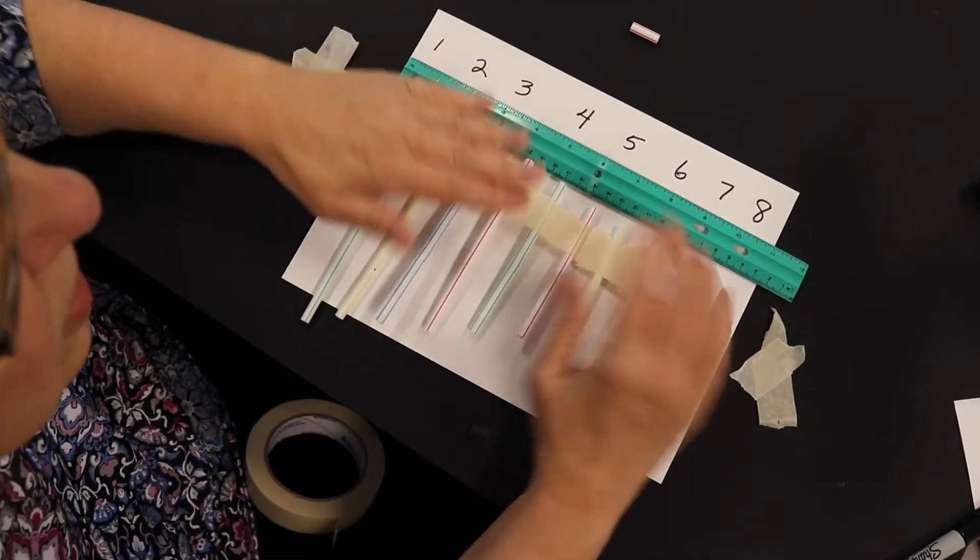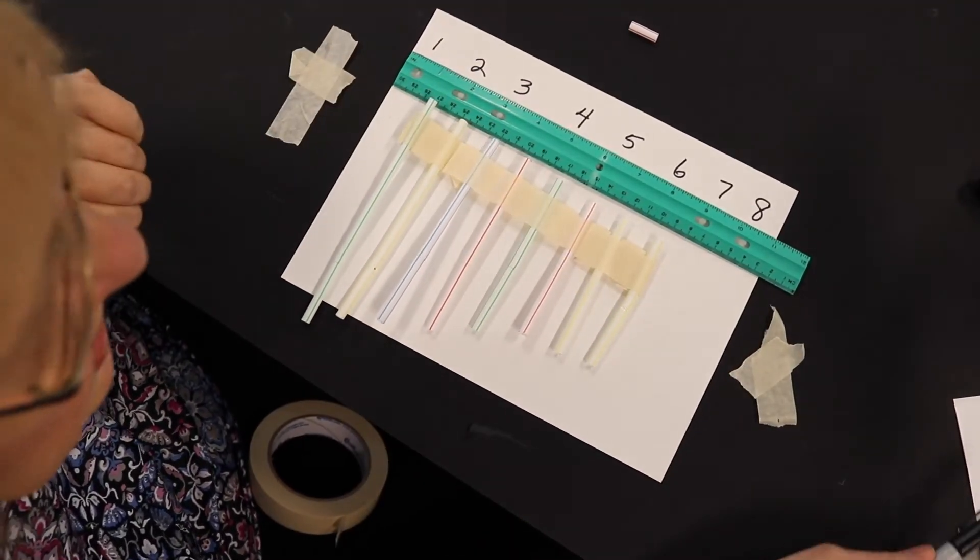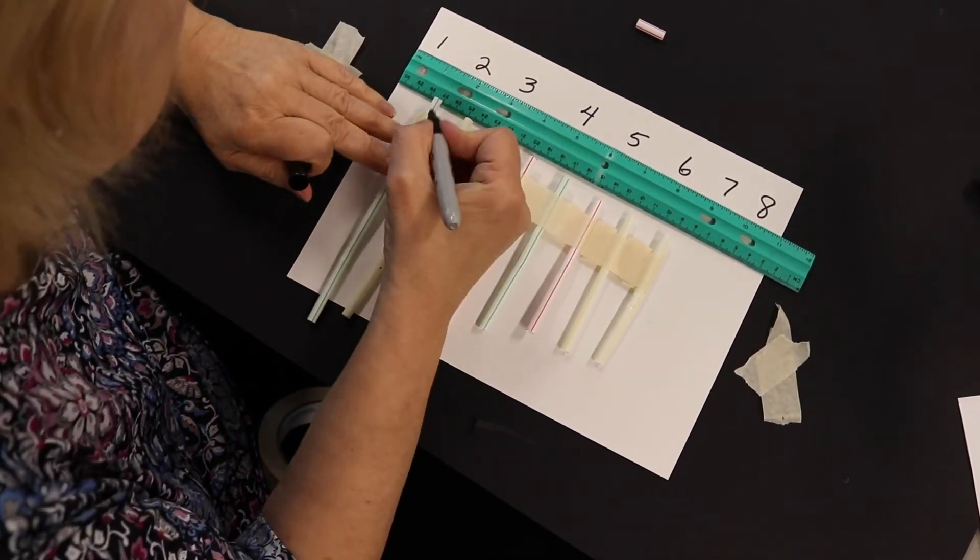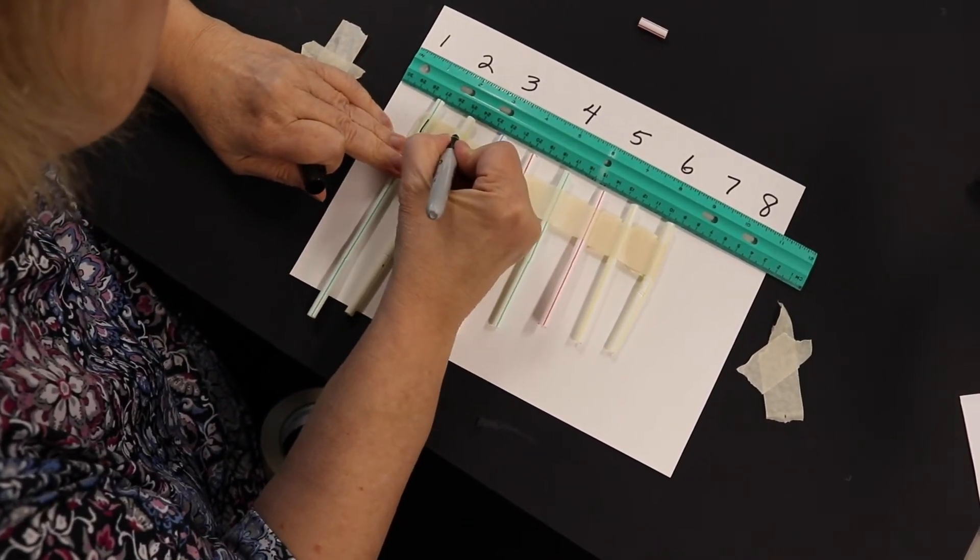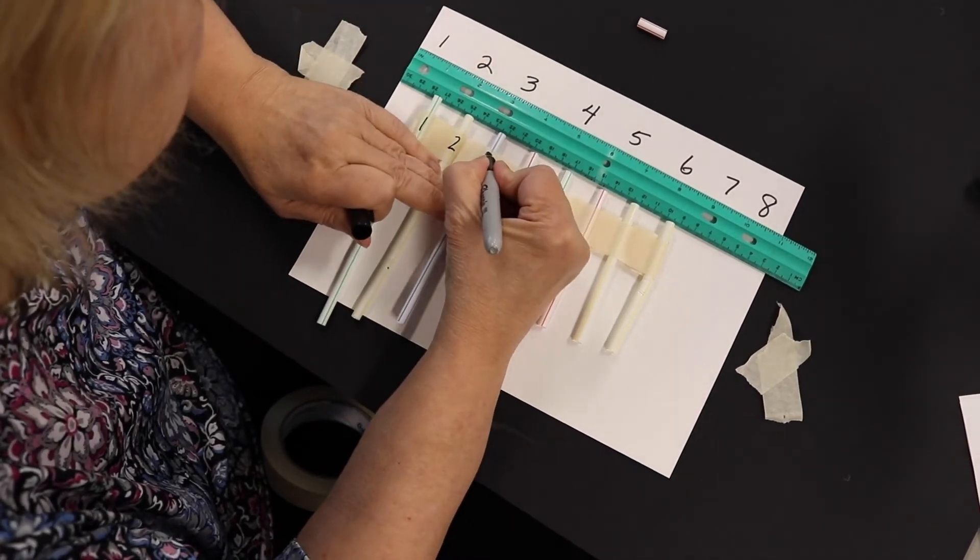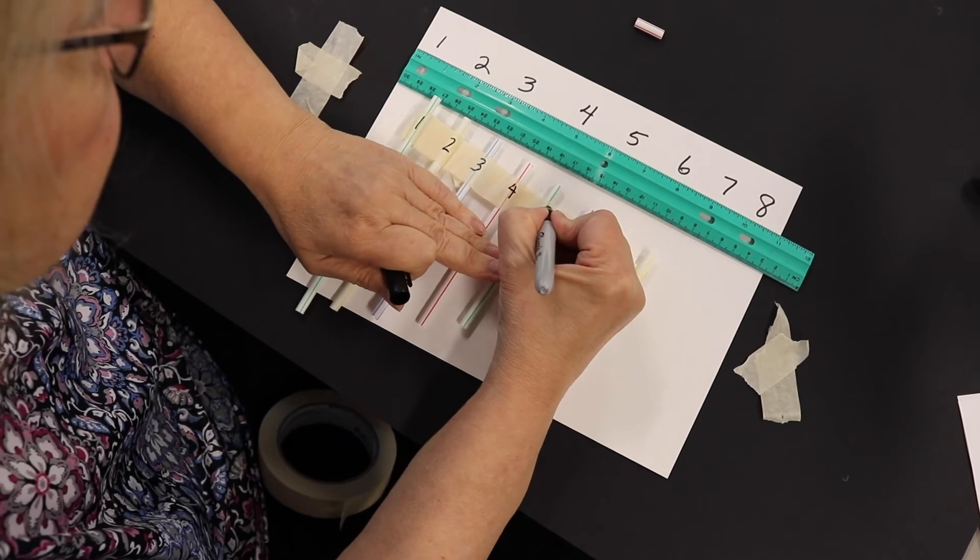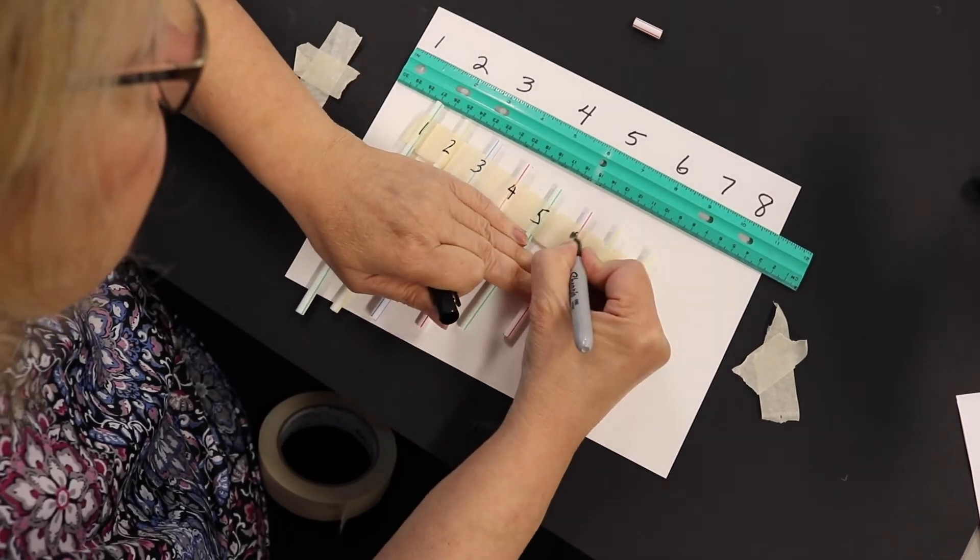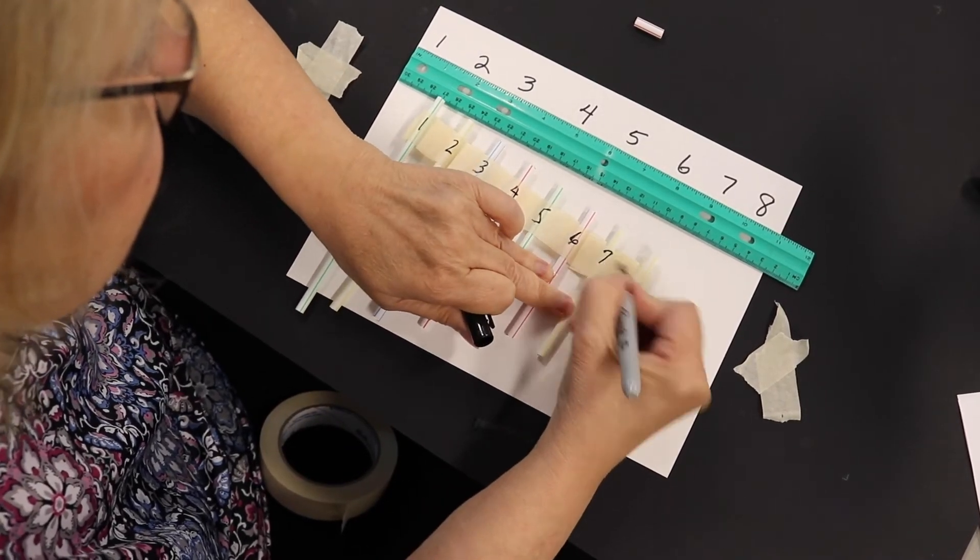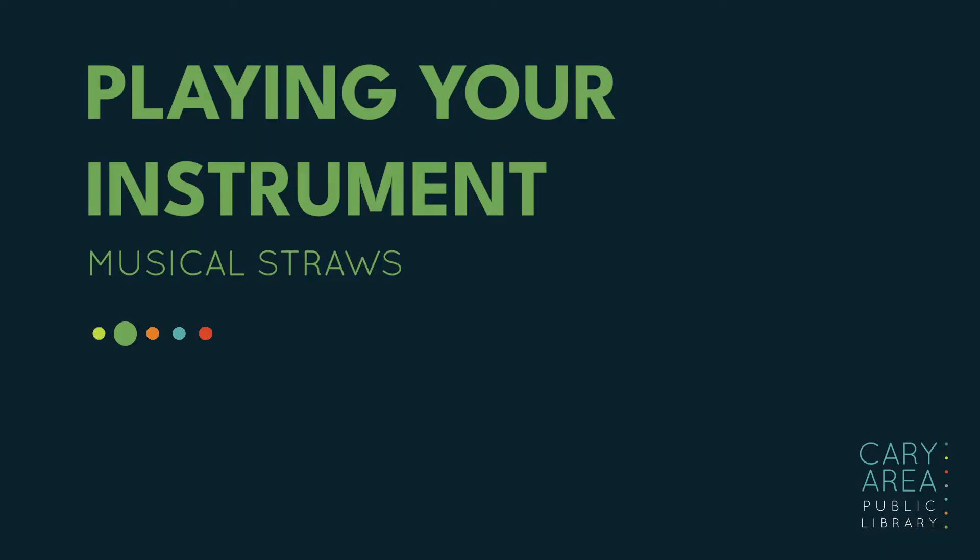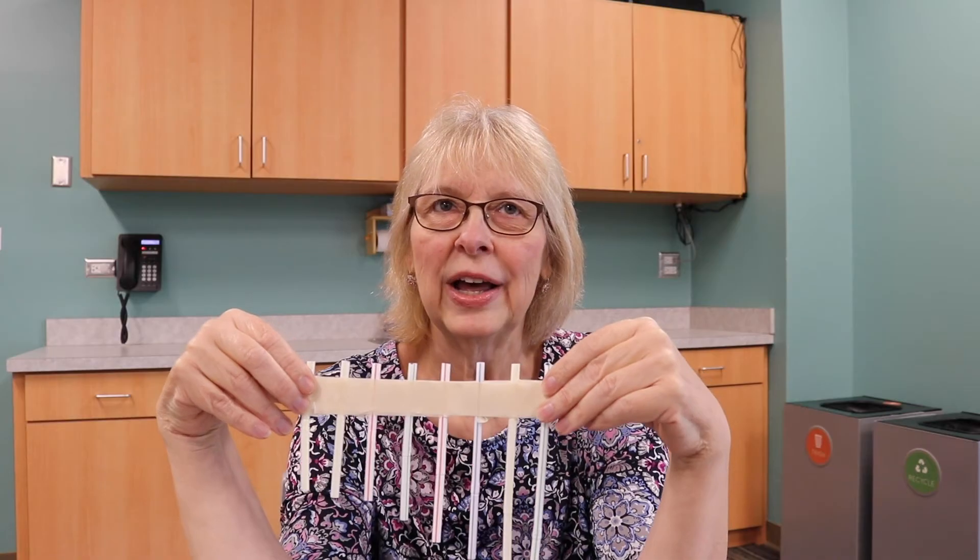Okay, now you're going to write the numbers one through eight across the tape so that you can see what the straws are when you blow on them. First one's one, two, and you number this up to eight.